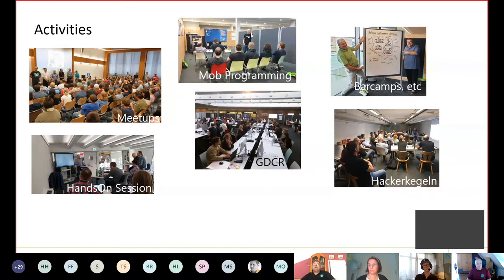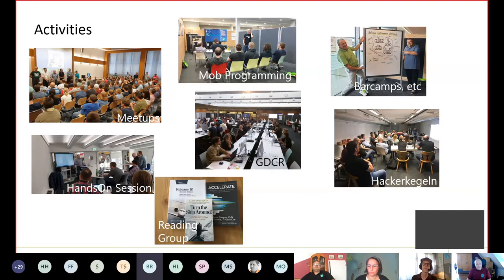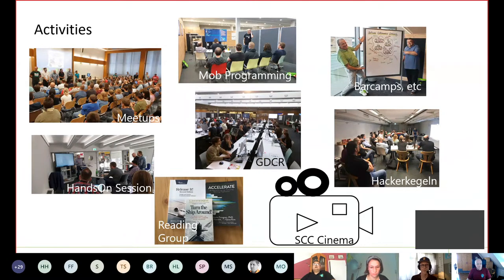Mob programming is for a whole team — the classical way is that there's a driver dealing with mouse and keyboard and there's a bunch of navigators to tell the way. The best of the team goes into the code, and the role changes from time to time. Since about two years, we also have a reading group: somebody suggests a book, and the folks who are interested read the book in parts, each on their own, and discuss the content later together — sometimes in a beer garden. And we also have a kind of cinema: people meet watching a video on YouTube, for example a recorded talk at a conference, and discuss it afterwards. As usual in a cinema, we also offer soft drinks and popcorn.